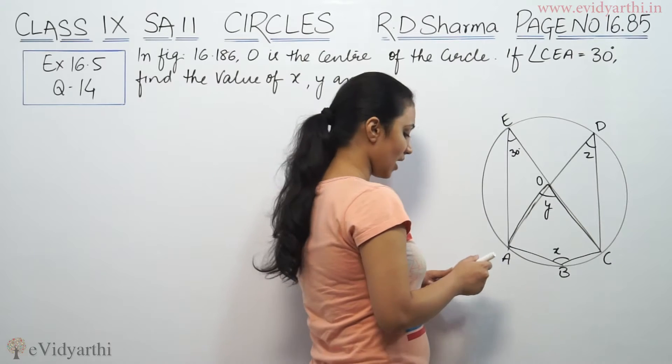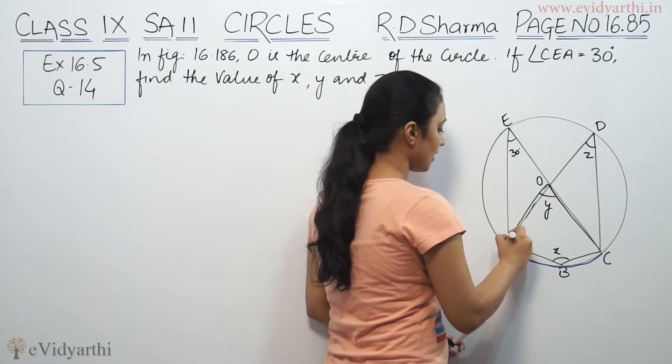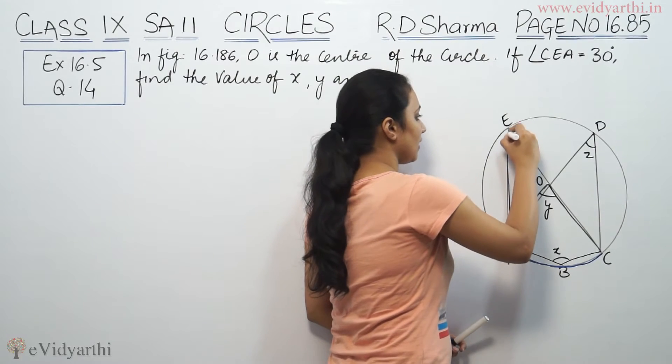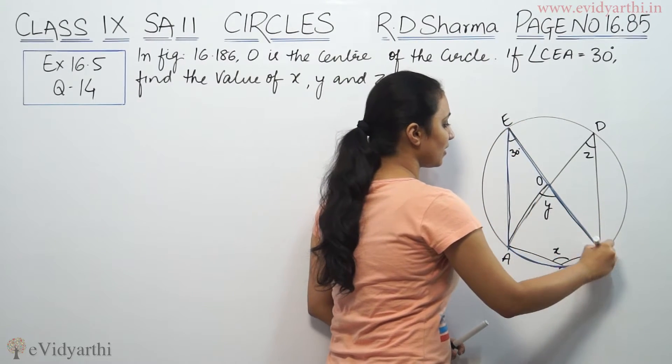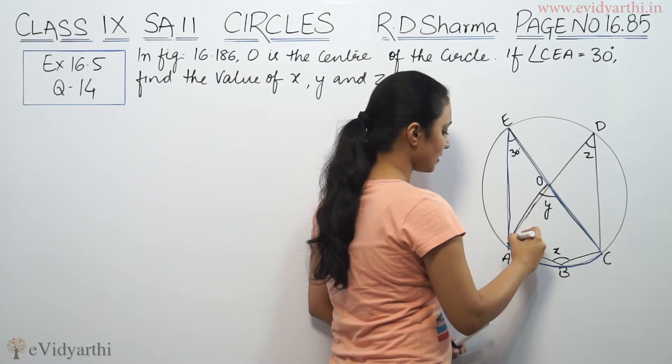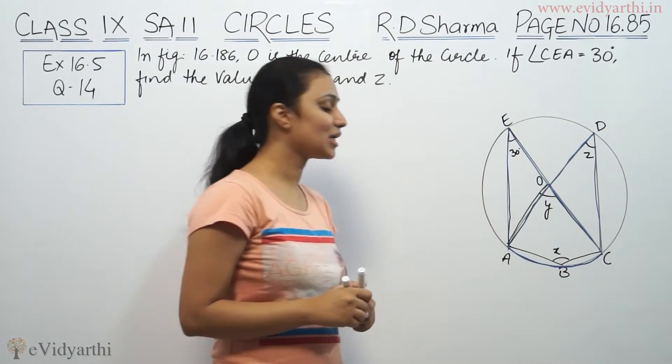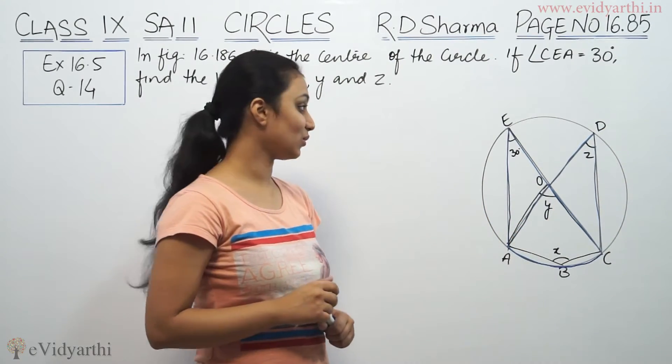So first, we have here one angle is 30, and in this segment one angle is 30, which is Z. Angles in the same segment of a circle are equal, so their values will be equal.